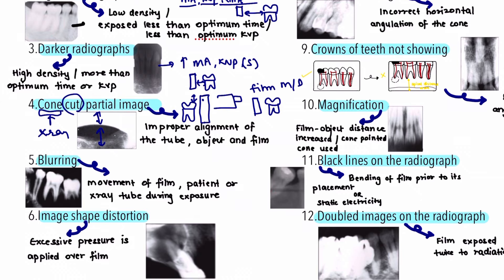The next projection error is blurring, which can be due to movement of the film, patient, or x-ray tube head during exposure. The correction is to instruct the patient not to move themselves or the film, and to ensure the stability of the x-ray tube head.